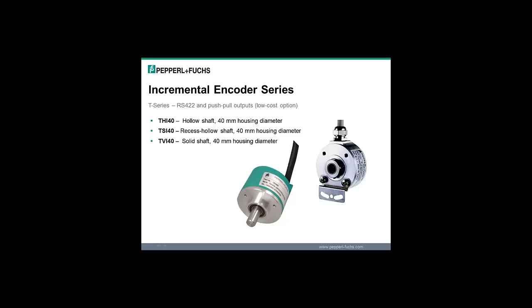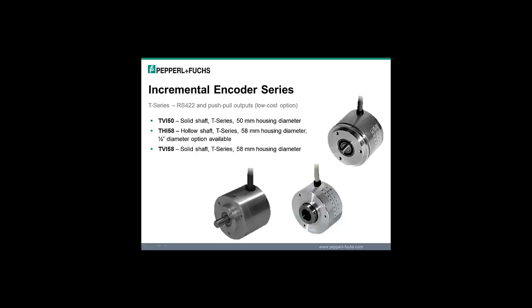The T-series encoders have 5 to 30 volts DC and is a lower cost option. Applications that need 1,024 pulses per revolution or lower should look first at the T-series. Different housing diameters and shaft options are available. In the T-series, the TVI-50 is a solid shaft, 50 millimeter housing diameter. The THI-58 is a hollow shaft, 58 millimeter housing diameter with a half inch diameter option available.